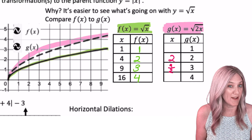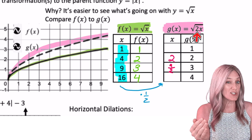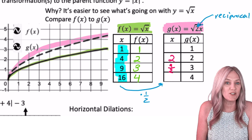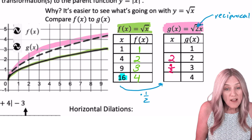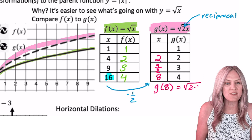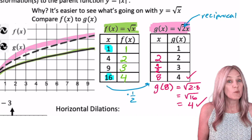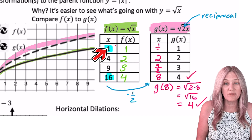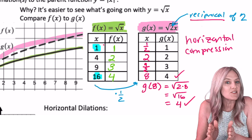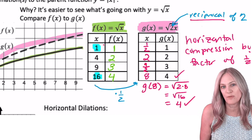I think I've figured out the pattern — we are multiplying the original x value by one-half. But where's one-half coming from? We have a 2, and that's just the reciprocal. So if I multiply by the reciprocal, I have the new x value. Testing with 16: half of 16 is 8. G of 8 equals square root of 16 — output is 4. It becomes a horizontal compression by a factor of one-half.